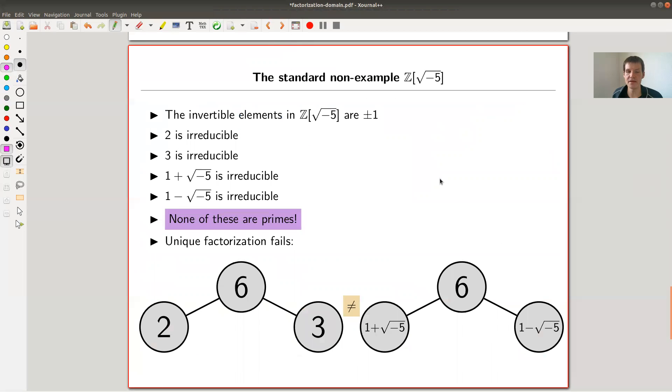Okay, let me illustrate why we really need to be so careful with the distinction between irreducible and prime. So the standard example is this funny ring here so Z adjoined square root of minus five. This just means all elements of the form a plus b times square root of minus five, where a b integers.